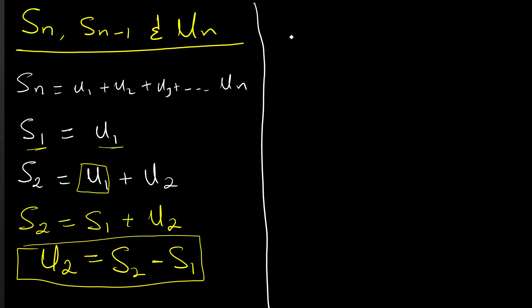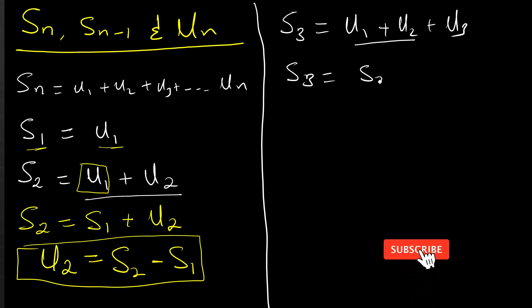Let's look at the sum of the first three terms: u_1 plus u_2 plus u_3. But u_1 plus u_2 is S_2. So S_3 equals S_2 plus u_3. What is u_3? My u_3 will be S_3, make it the subject, minus S_2.